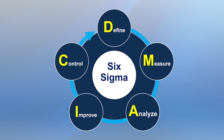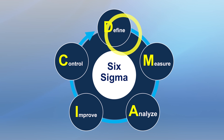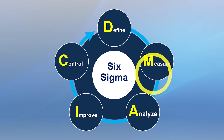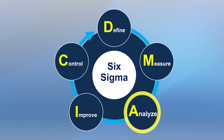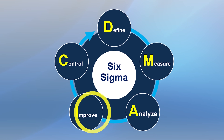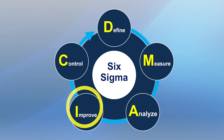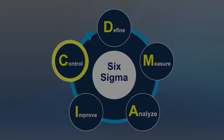There are only five steps in Six Sigma. Those five steps are Define, Measure, Analyze, Improve, and Control. Let's go through each one of these steps briefly.